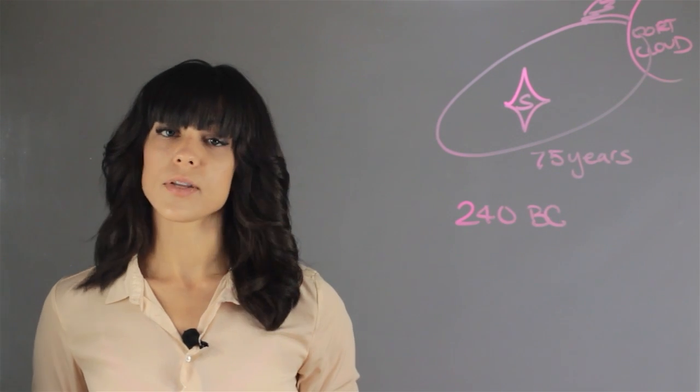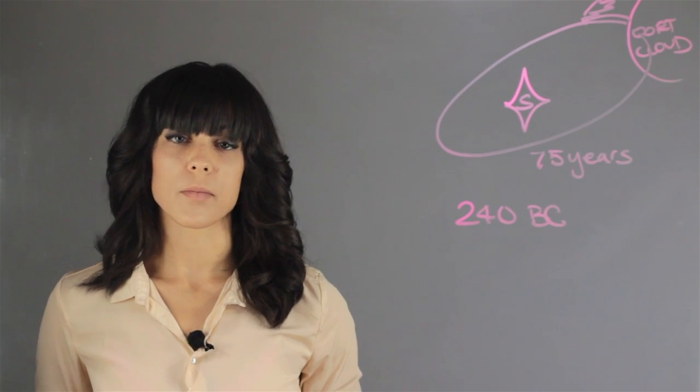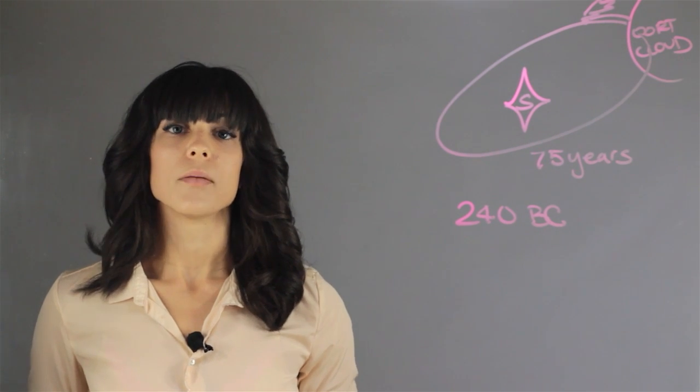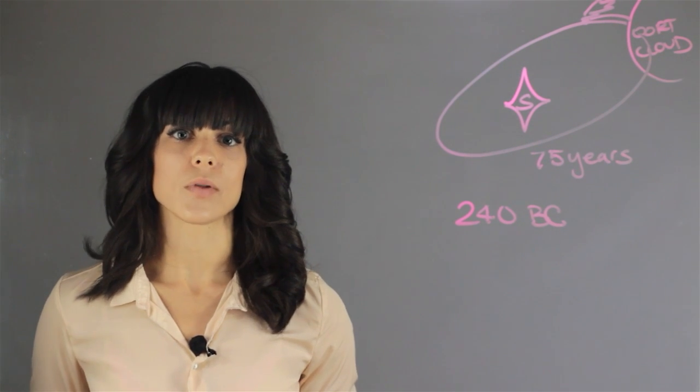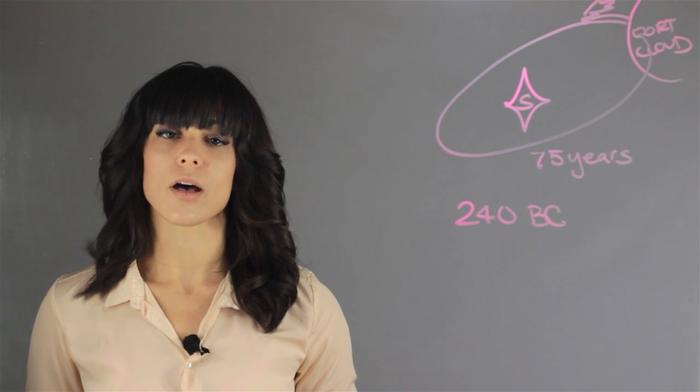So it takes 75 years for Halley's Comet to orbit and pass by the Sun. My name is Aileen Perez and this is how long is Halley's Comet's orbit.